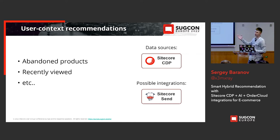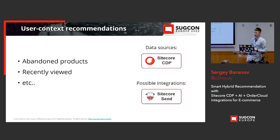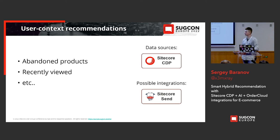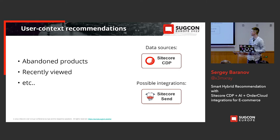The best place to get data for user context recommendations is Sitecore Customer Data Platform, because in Sitecore CDP you always have the context of your user and it's easy to extract the data you need. It's also a good idea to integrate Sitecore Send to send abandoned products in emails. One tip: if you have integration with OrderCloud using the Head Start application, it already has integrations with both Sitecore CDP and Sitecore Send.